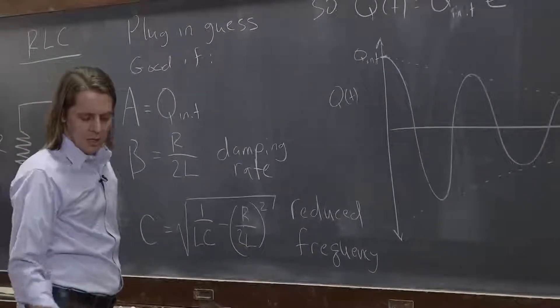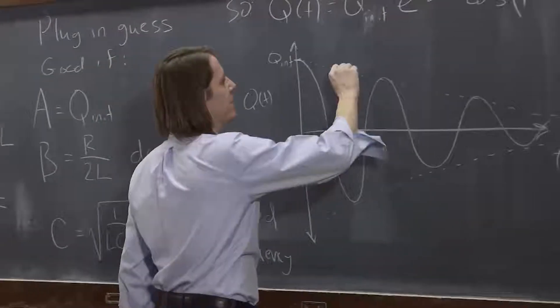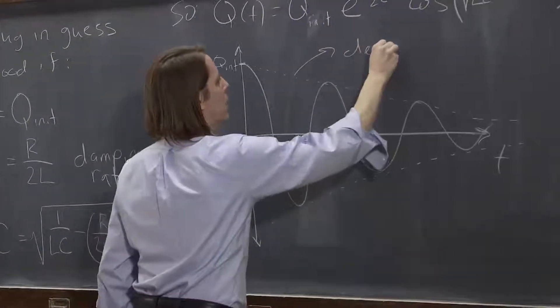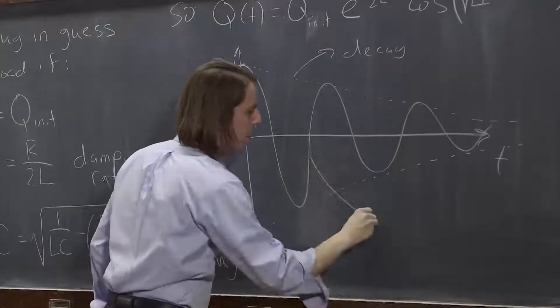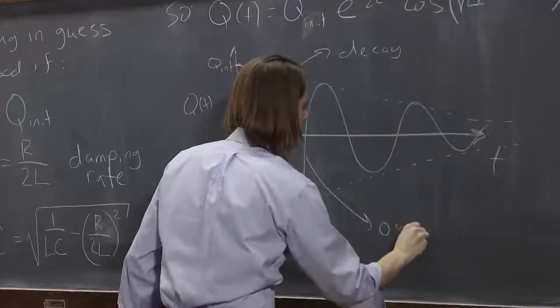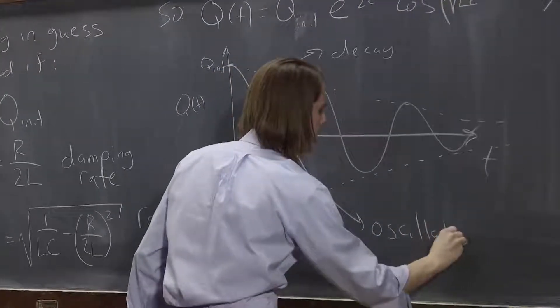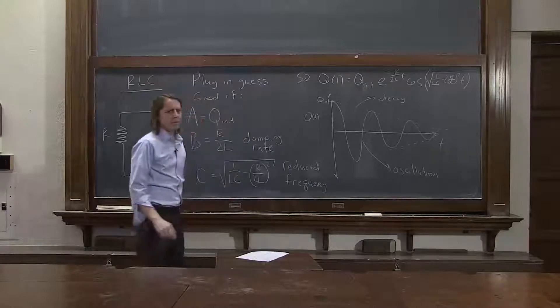And if you were to think about an envelope going around the amplitude of this oscillation, the envelope is like an exponential decay. So we could say this is the decay, this is the oscillation. And they happen together in an RLC circuit.